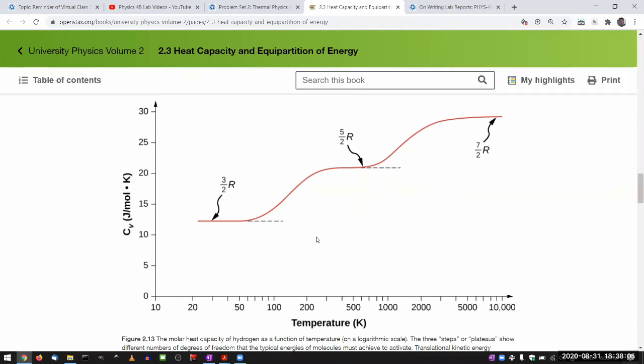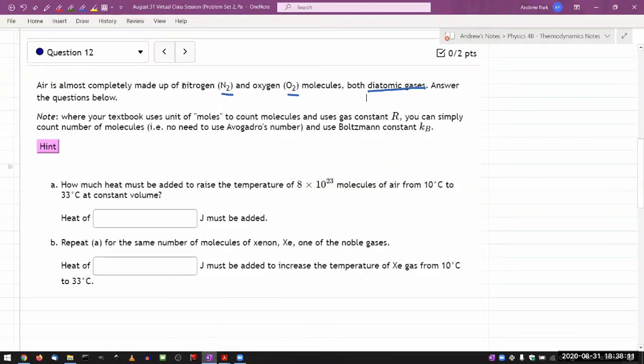So that's what you have to know for answering this question here, that you are dealing with diatomic gas. So you have to know that the degree of freedom that you are considering is five. That's just something that comes from the fact that it's a diatomic gas.